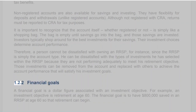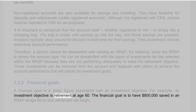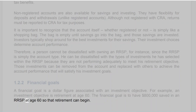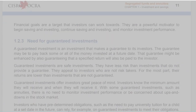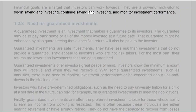Section 1.2.2: Financial Goals. A financial goal is a dollar figure associated with an investment objective — for example, an investment objective is retirement at age 60, and the financial goal is to have $800,000 saved in an RRSP at age 60. Financial goals are a powerful motivator to begin saving and investing, continue saving and investing, and monitor investment performance.